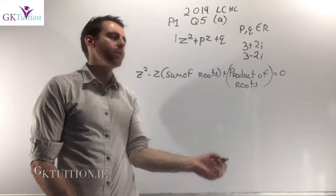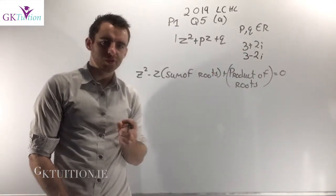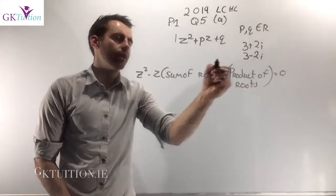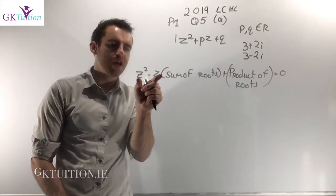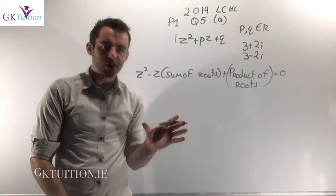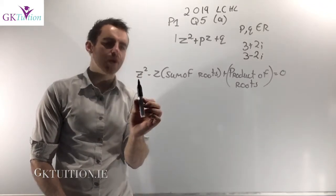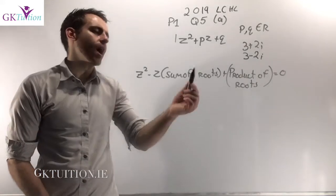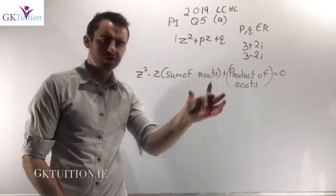Now this makes life a lot easier. I know both roots: 3 + 2i and 3 − 2i. Once you know the two roots of a quadratic, the easiest approach is to use this formula: every quadratic can be written as z² − z(sum of roots) + (product of roots). So if I add the roots together I get the coefficient of z, and if I multiply them together I get the constant term.